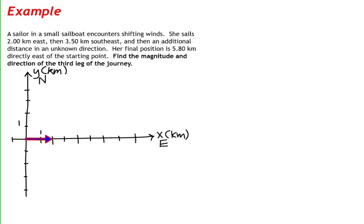Let's now add the legs of our journey. The first leg of our journey takes the sailboat two kilometers east. The second leg of our journey finds our sailboat turning southeast, which is 45 degrees below the x-axis, then traveling for three and a half kilometers at 45 degrees below the x-axis.